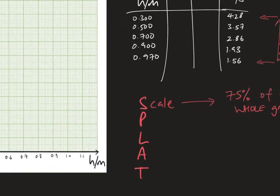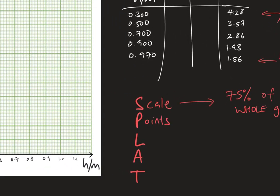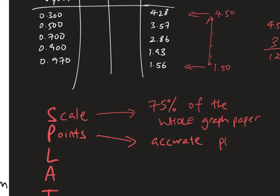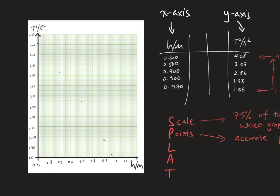After scale, we have points. This one actually is what you've learned from math. Just read off the table and go ahead and plot the points. So that's what I'm going to do right now. Of course, for points, we are looking for accurate plotting. Let me plot the points.